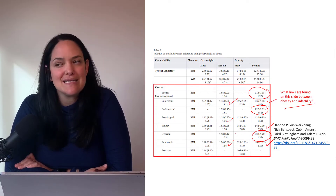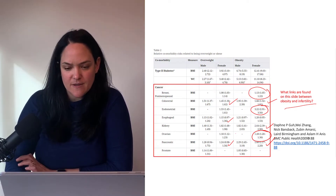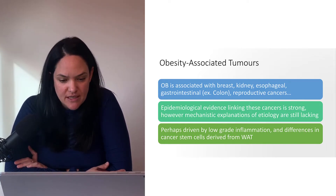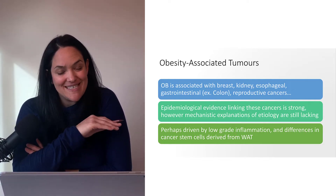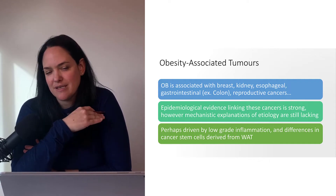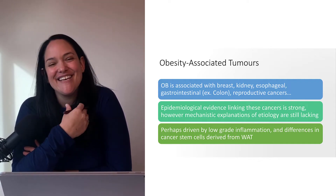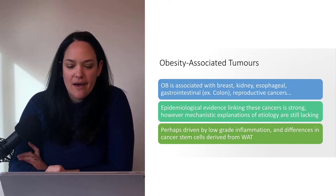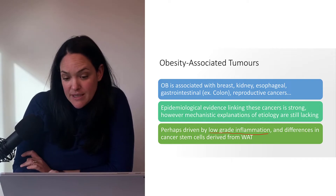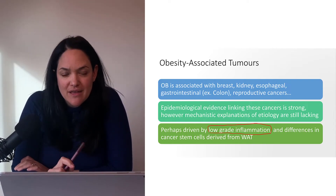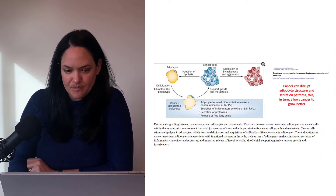The exact mechanism has still yet to be unpacked. Like we said — breast, kidney, esophageal, gastrointestinal, specifically colon cancers, and reproductive cancers — the epidemiological evidence linking obesity and cancer is clear. The mechanism is not. And again, something we keep saying every unit: low-grade inflammation is probably one of those factors linking obesity and cancer.